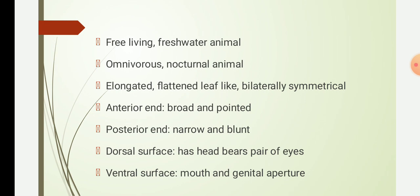Planaria is a freshwater animal, mostly found in freshwater. This particular species lives in ponds, lakes, marshes, and rivers. It is found on vegetation or under stones. It is omnivorous in habit, meaning it feeds on algae and small plants. It is also nocturnal, meaning it is active during night time.